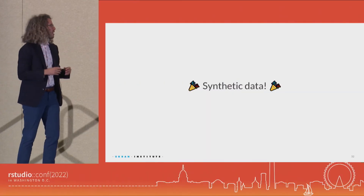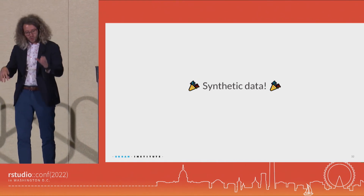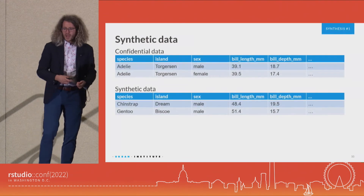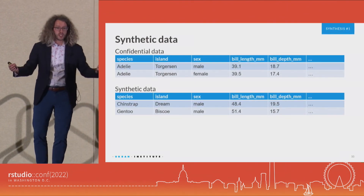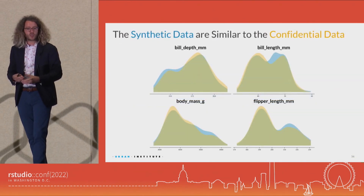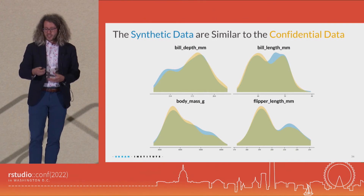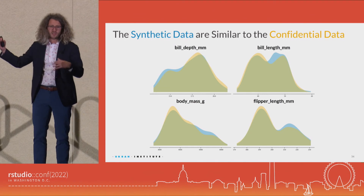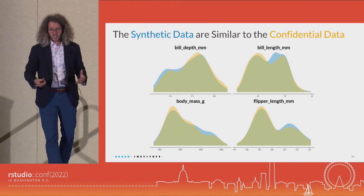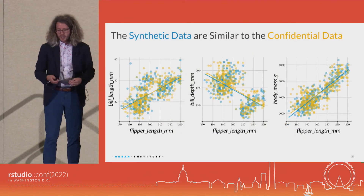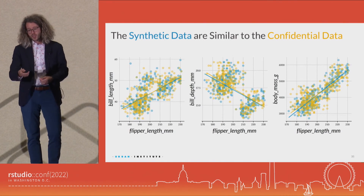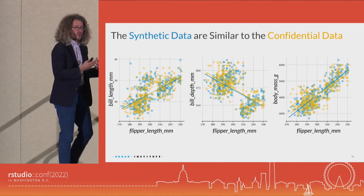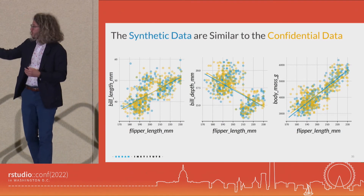So we have synthetic data — we're done, right? If this is all I had to do, I'd be very happy, spending time by the pool. But in reality I spend most of my day saying: have we done a good enough job? We can look at the univariate distributions for the four numeric variables — here I have density plots where the synthetic data are in blue and the confidential data are in yellow — and you see we pretty closely recreate the univariate distributions. We only have 300 observations, so any differences could just be because of sampling error. We can also look at bivariate relationships: flipper length and bill length, flipper length and bill depth, and flipper length and body mass. In all three cases I think we do a pretty good job of recreating the data, and if you fit regression lines, they look almost identical.